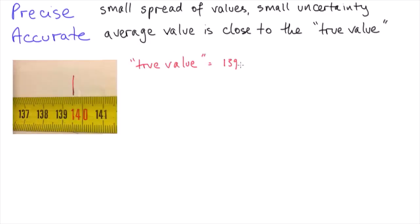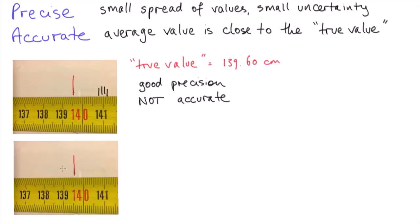Now precision and accuracy are not the same thing. It's possible to have experiments that are very precise but not accurate, and others that have low precision, but where the average of many measurements is spot on the true value.